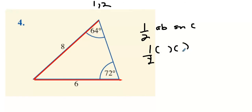We can use one half times 8 times 6, but we don't know the angle that's in between them. So to find the angle in between them, we have to do 180 take away 64 take away 72.